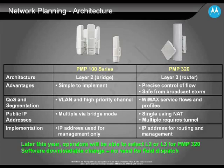There are advantages and disadvantages to both Layer 2 and Layer 3 approaches. What's important to note is that when doing things like QoS, segmentation of traffic, or assigning public IP addresses, there are just different ways of doing it with Layer 2 versus Layer 3. With the PMP320, the way you go about assigning public IP addresses, setting up quality of service, and segmenting traffic will be different from what you're used to seeing. It's still a straightforward process and well documented, with IP reference tools available to guide you through it.